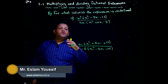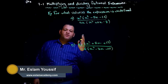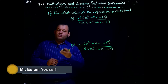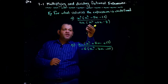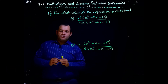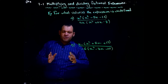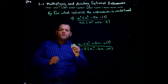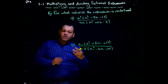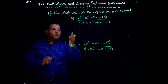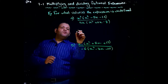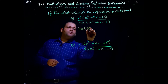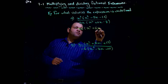In question number four and five, we need to find the value or values which make the expression undefined. As we said before, the expression is undefined if the denominator is equal to zero. We will not simplify — we just work with the denominator, which is 4x times (x² + 6x − 7).